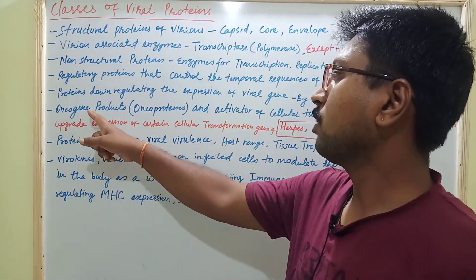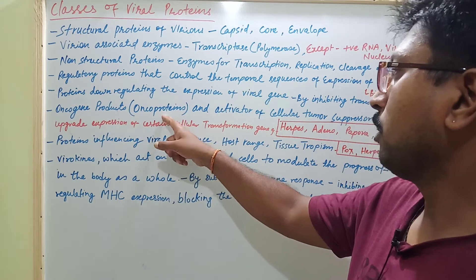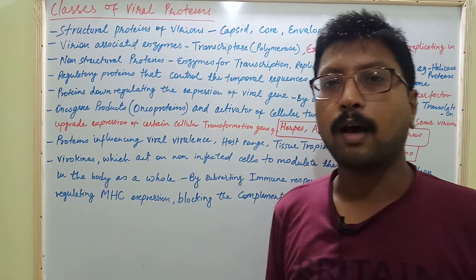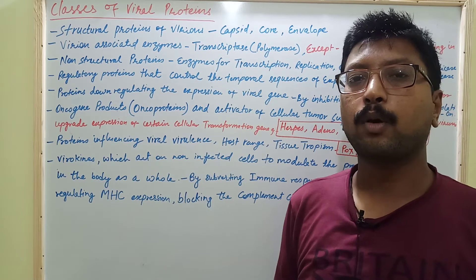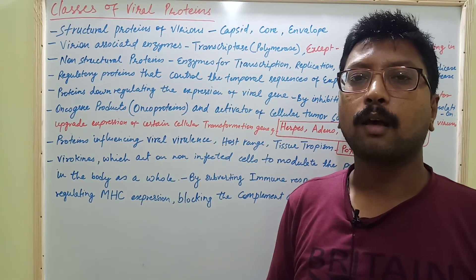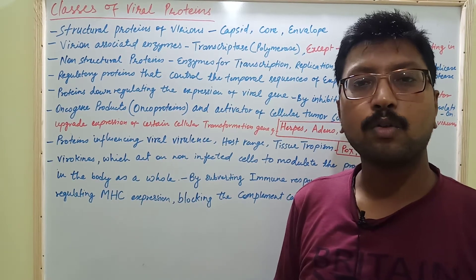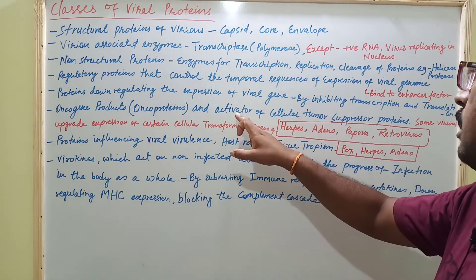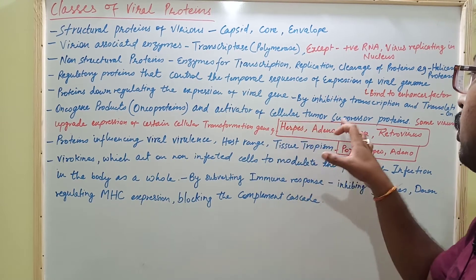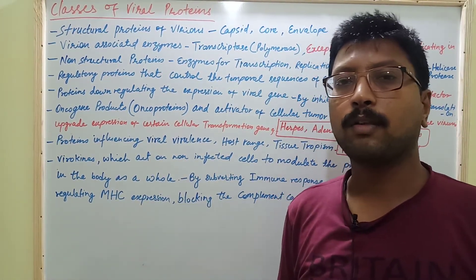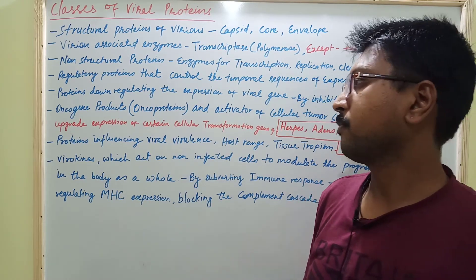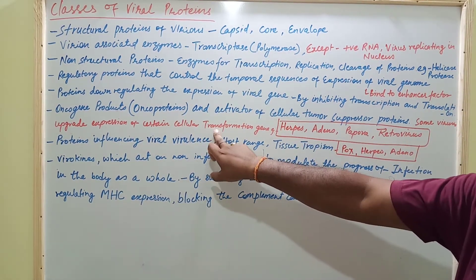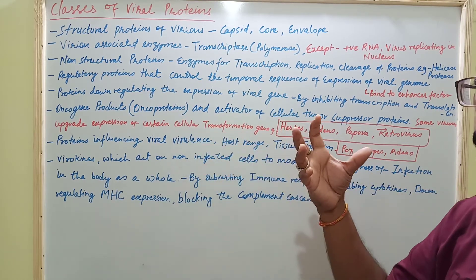Next are the oncogene products, also called oncoproteins and activators of cell tumor suppressor proteins. These proteins are basically responsible for tumor production in the body of the host. They either produce oncogenes or suppress the activation of cellular tumor proteins, and are generally responsible for producing oncogenes.